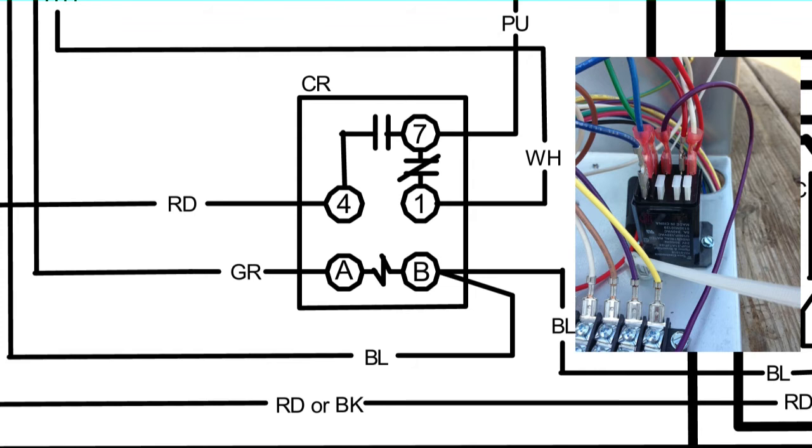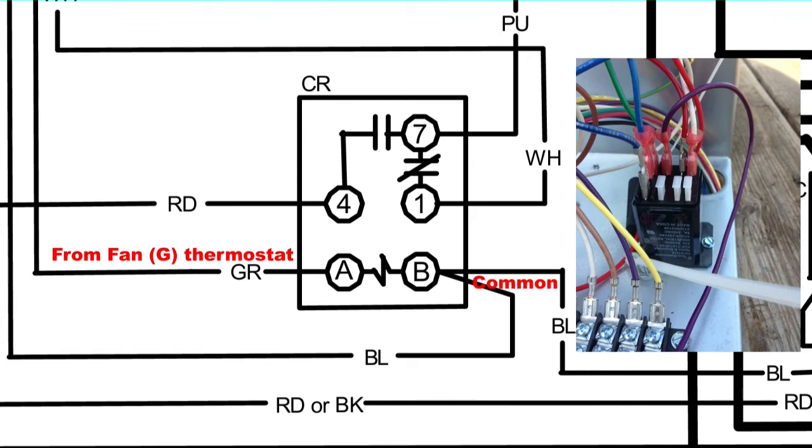You see a GR wire heading into the A—that is a green wire from the low voltage field connection. That wire is from the fan terminal on the thermostat. If you turn the thermostat to fan or to heat or cool for a heat pump, it will send that green 24-volt to that A. On the B side, that is your common, typically blue.